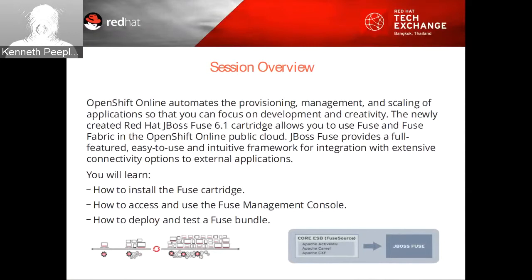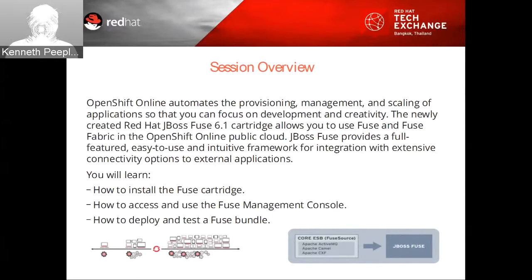OpenShift Online is Red Hat's public cloud application development and hosting platform, which automates the provisioning, management, and scaling of applications, so you can focus on writing the code for the business or your next big idea. The key benefits of OpenShift are the speed, the choice, the open source, and the ease of use. Fuse is the full-featured, easy-to-use, and intuitive framework for integration with extensive connectivity options to external applications.